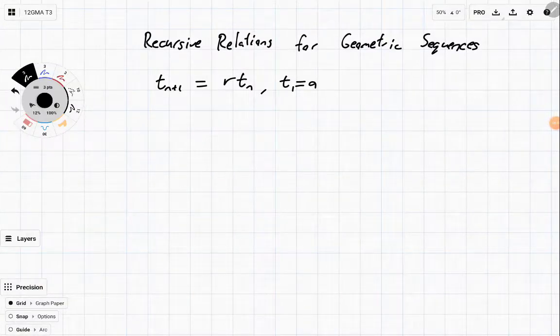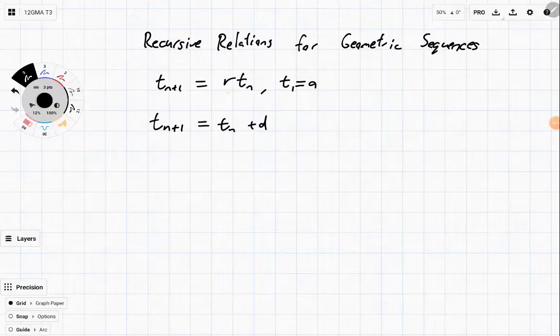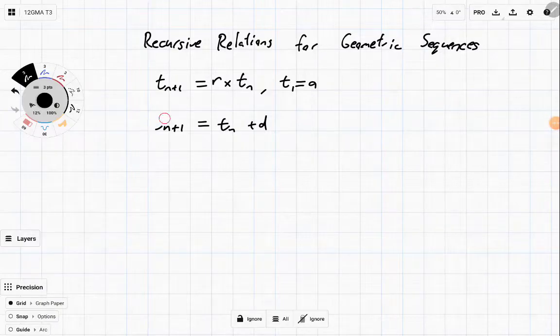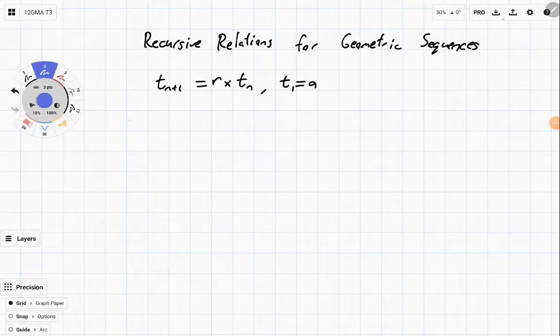So we have t_{n+1} equals r times t_n for t_1 equals a. Now this looks a lot like what we had in the arithmetic sequence. We had t_{n+1} equals t_n plus d. Well in this case we've got r times t_n.